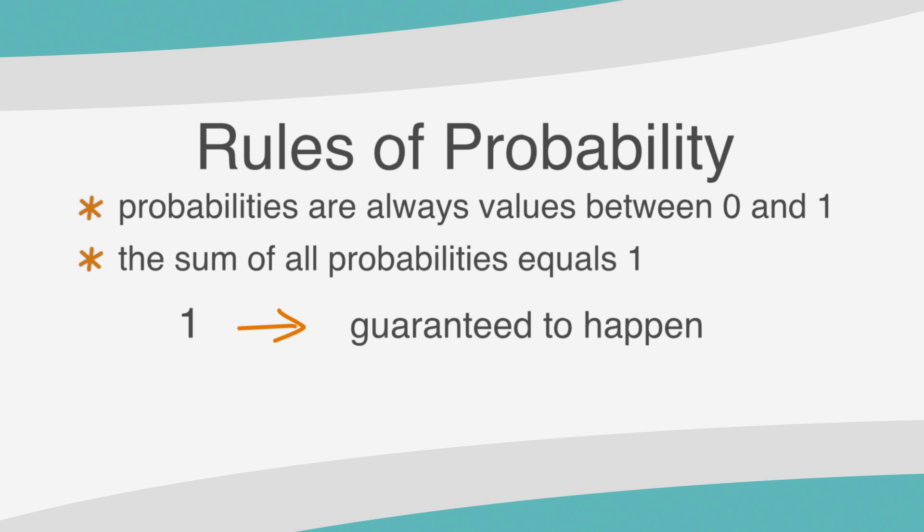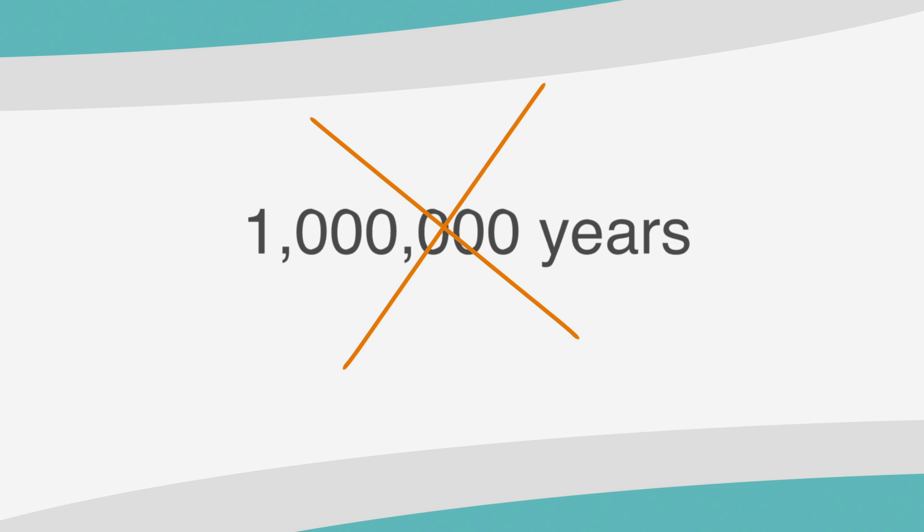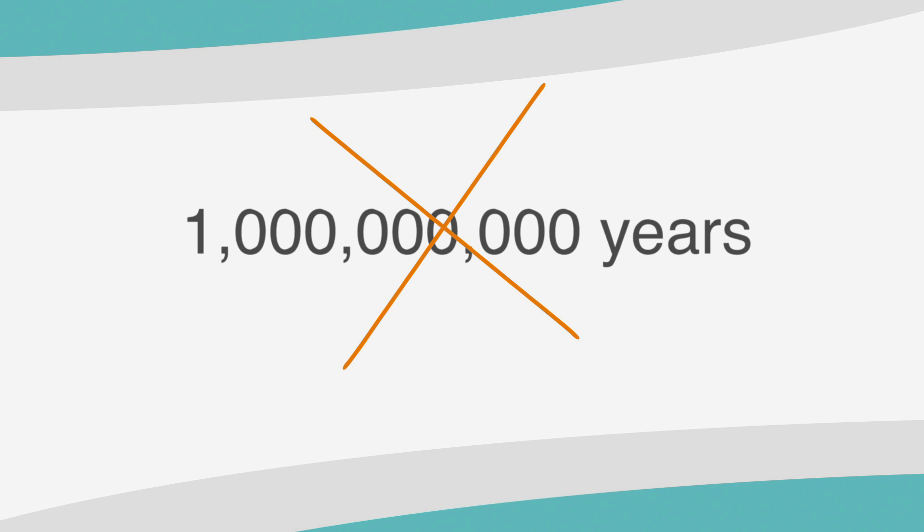One means an event is guaranteed to happen, and zero means an event is absolutely, positively not going to happen. Not in a million years. Not in a billion years. Not ever. Now, let's run through a sample SAT problem where these rules will come into play.